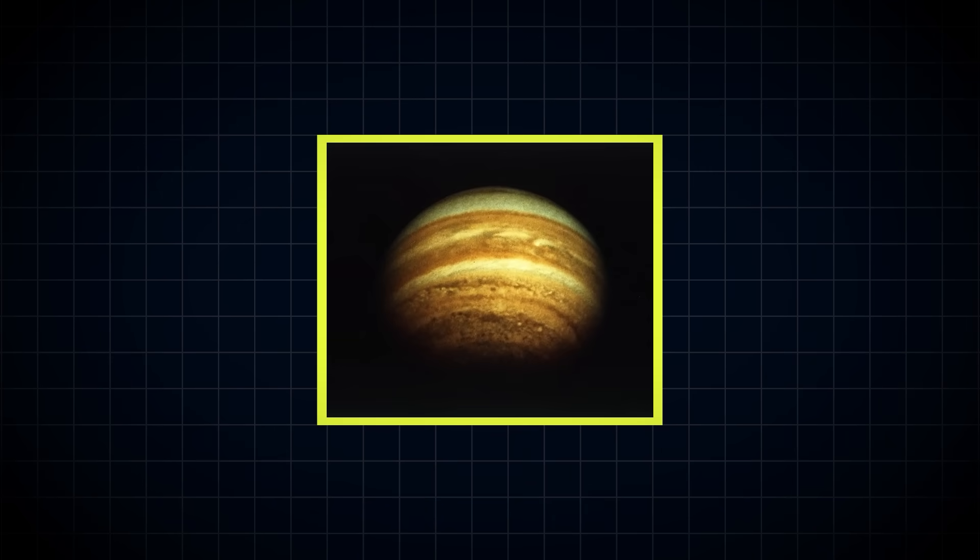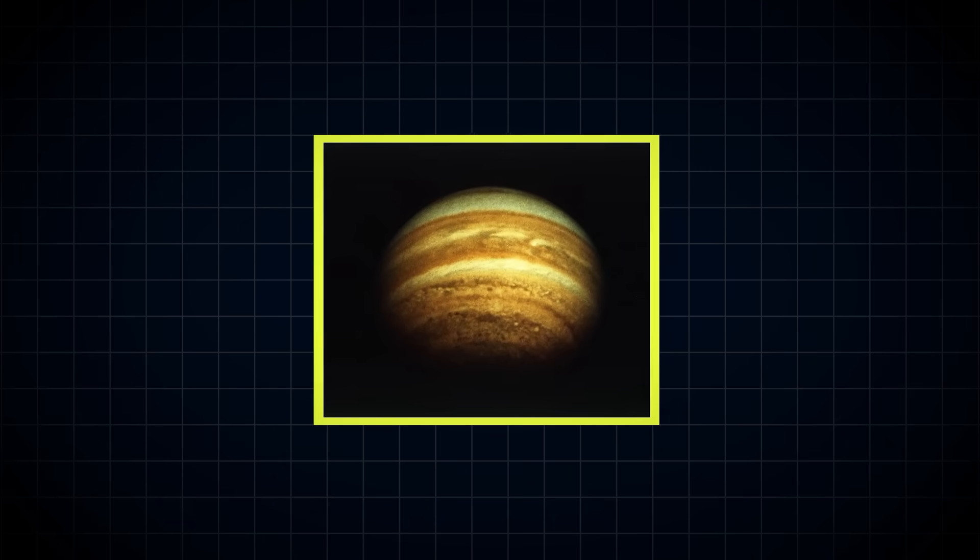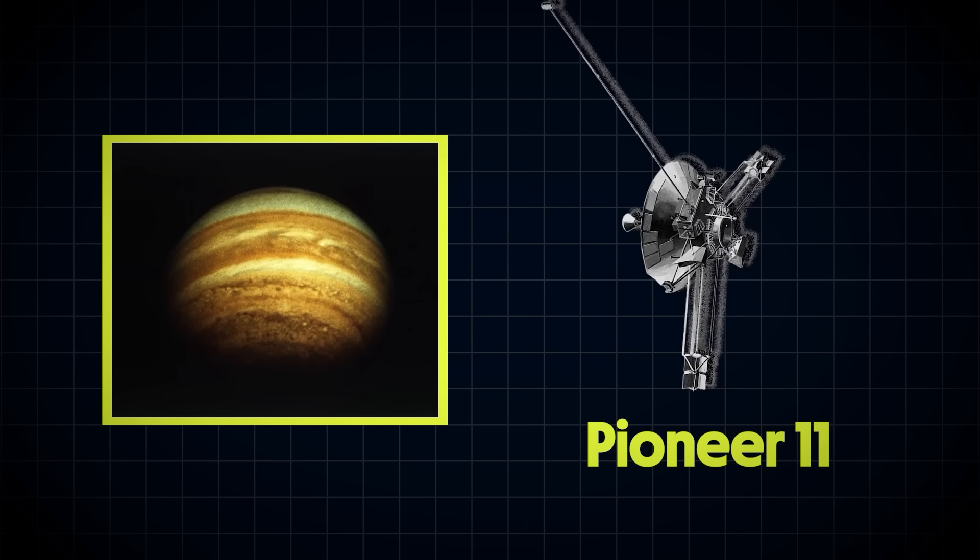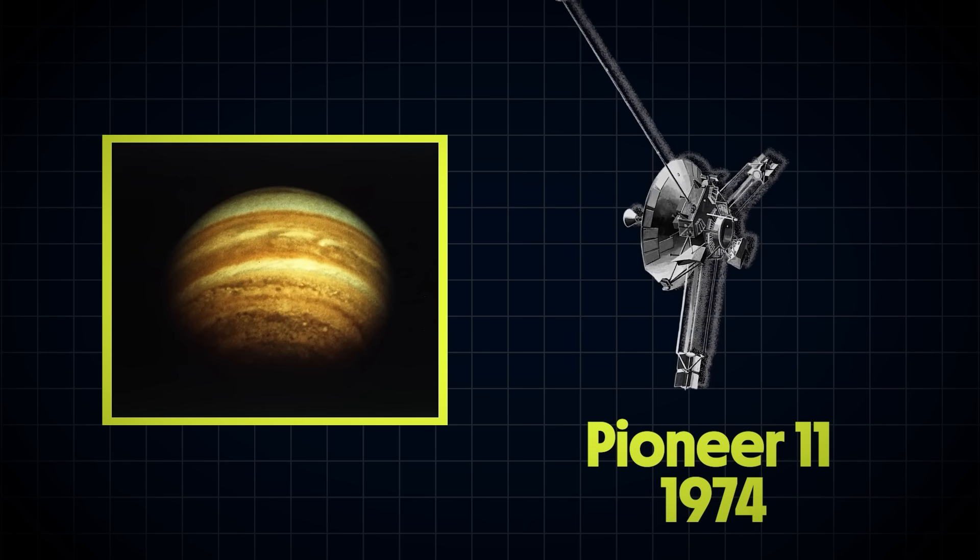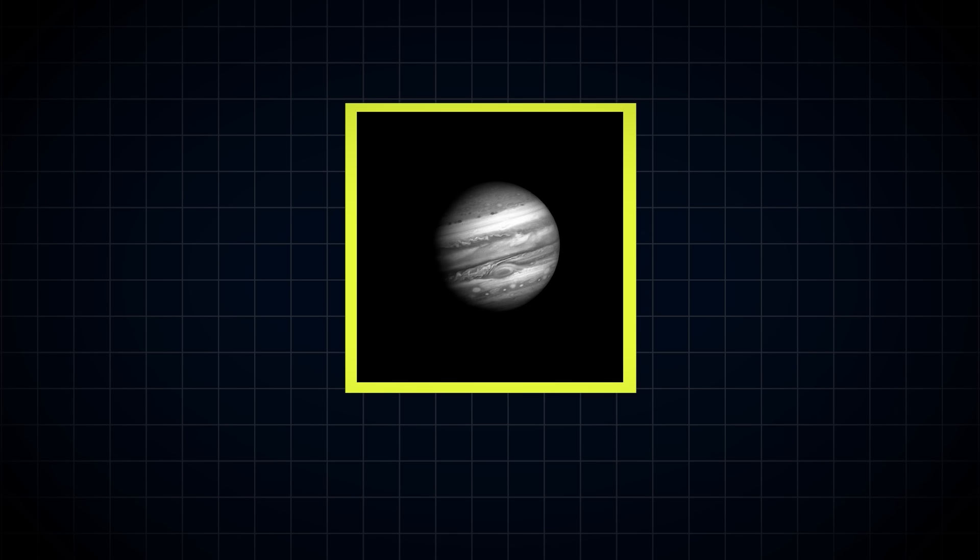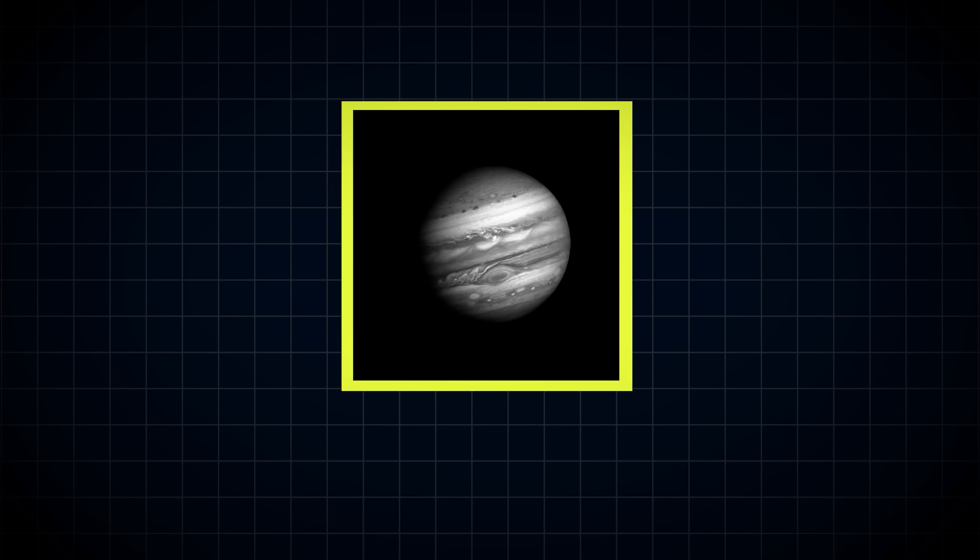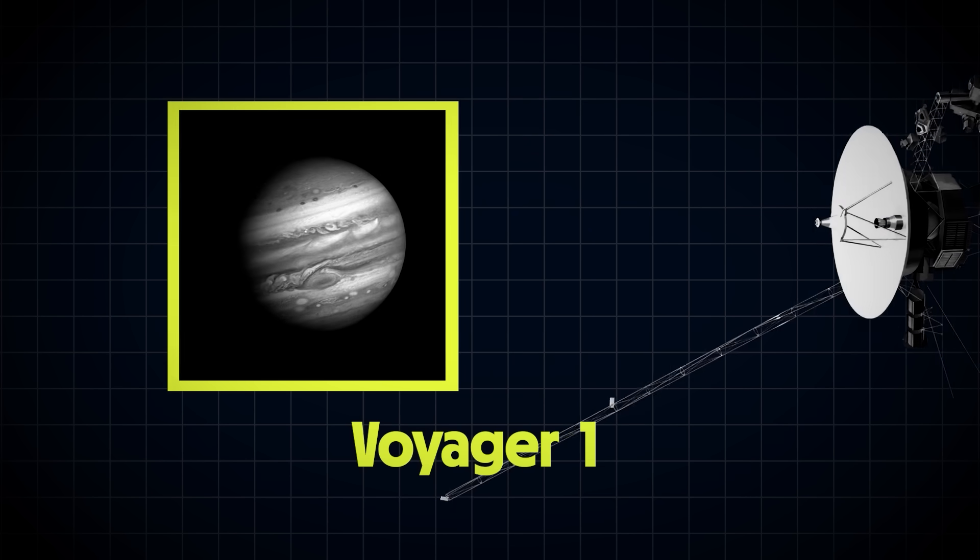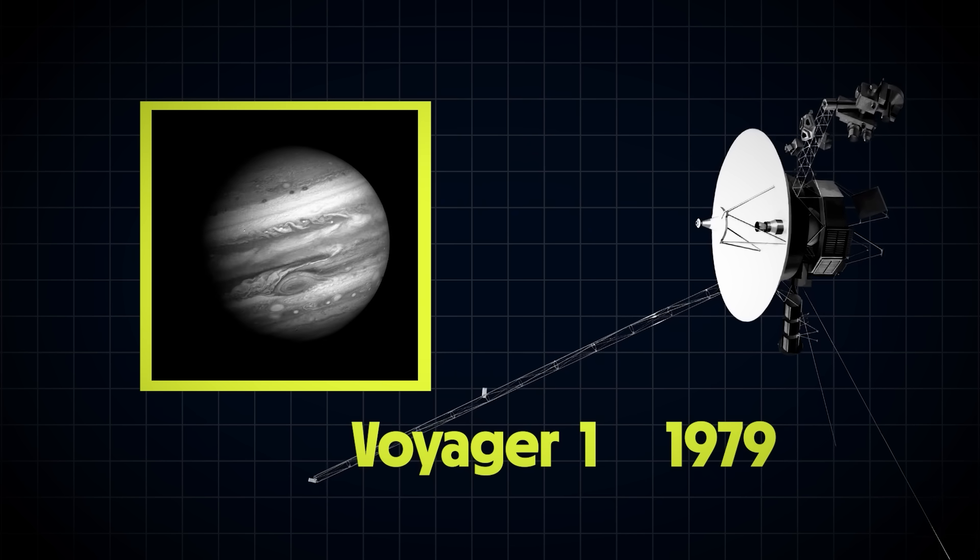This is the first close-up photograph of Jupiter ever taken. It was captured by a NASA spacecraft called Pioneer 11 in the year 1974. And this is the first moving picture of Jupiter, a time lapse of images captured by Voyager 1 as it approached in 1979.